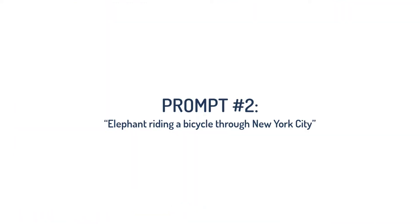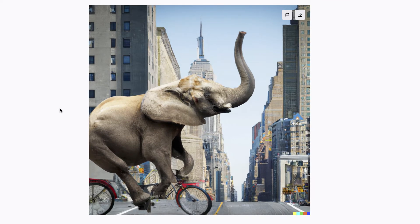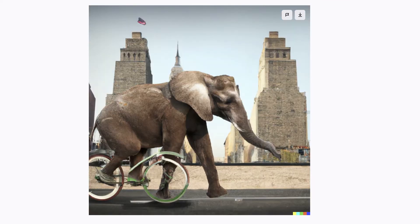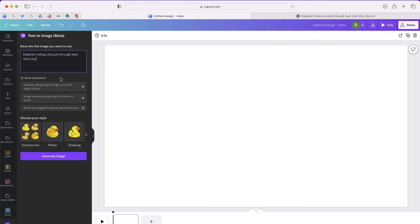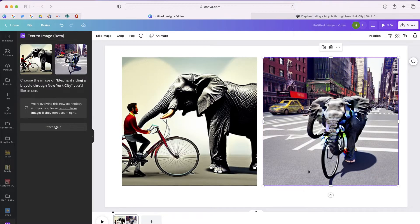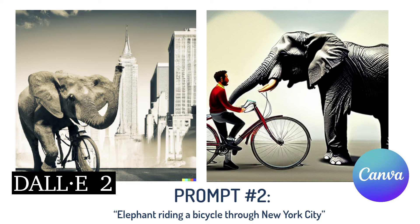Here's our next prompt: an elephant riding a bicycle through New York City. Let's try first with DALL-E 2 — here are the results, as you can see they look pretty cool. Now let's try that same prompt in Canva's text to image. Here are the two images that Canva was able to generate. As I put these side by side, you can see what each program was able to generate based on this prompt.